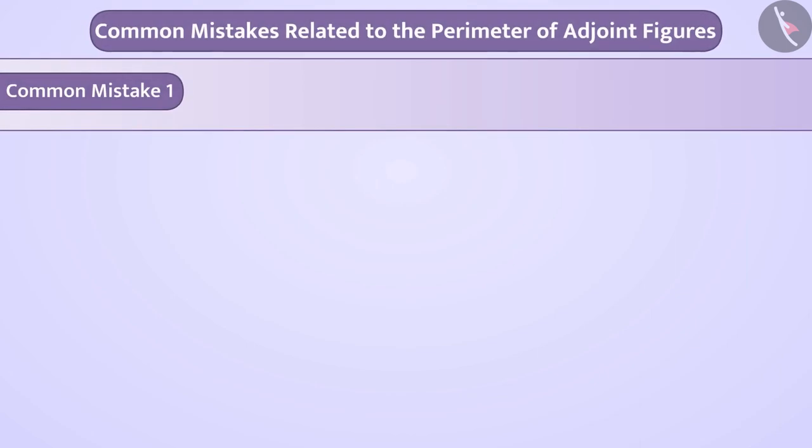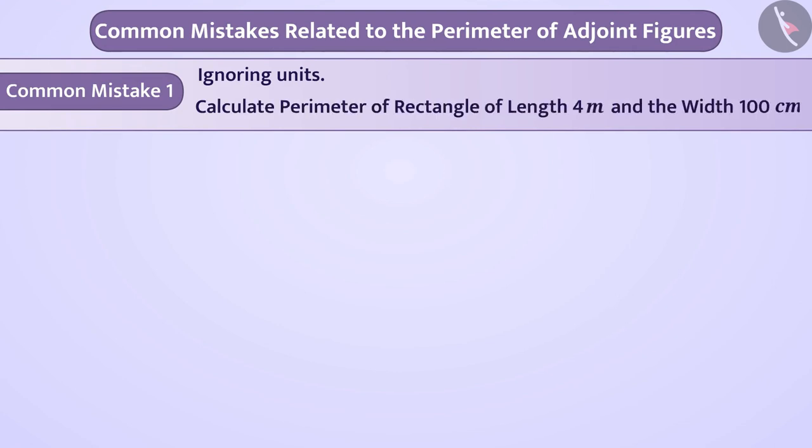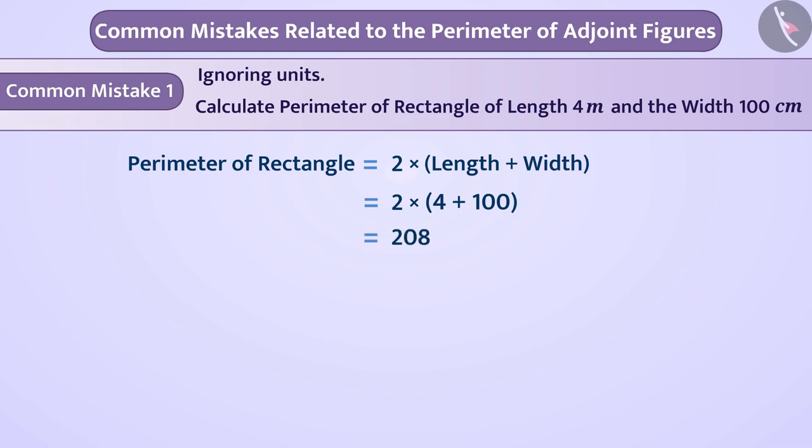Common mistake 1. Ignoring units. If students are asked to calculate perimeter of rectangle of length 4 meter and the width 100 centimeter, so they get the perimeter of rectangle is equal to 2 multiplied by length plus width which is equal to 2 multiplied by 100 plus 4 is equal to 208 meter which is an incorrect answer. They do not equate the units of length and width before determining the perimeter.